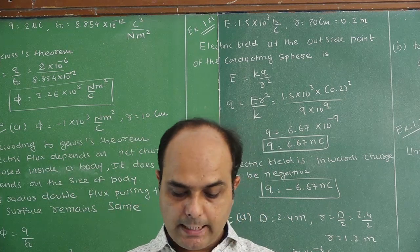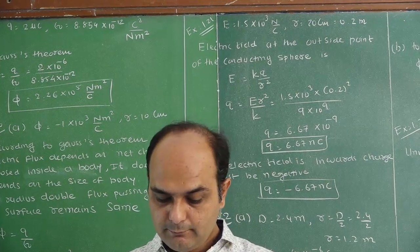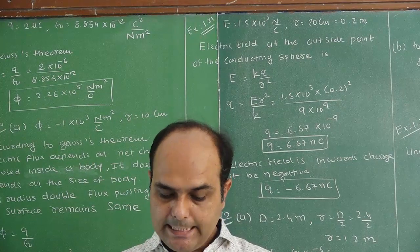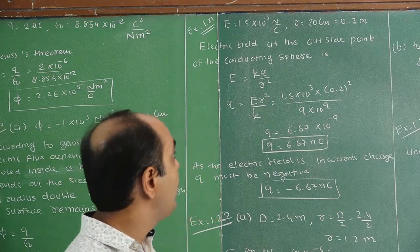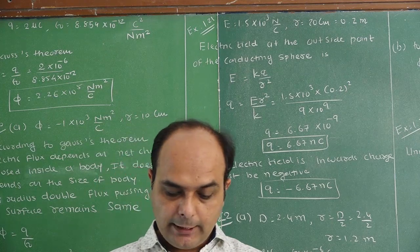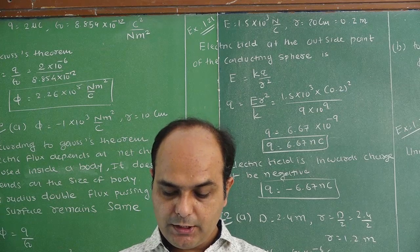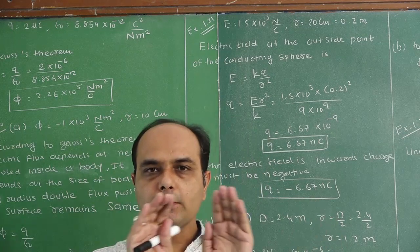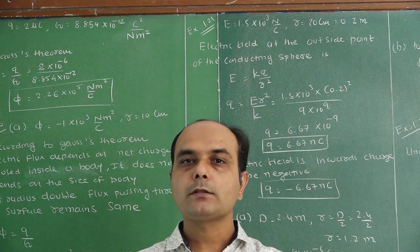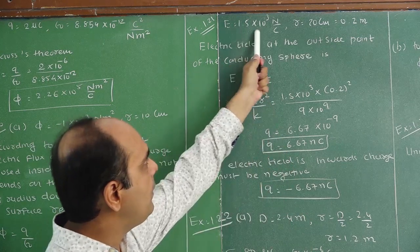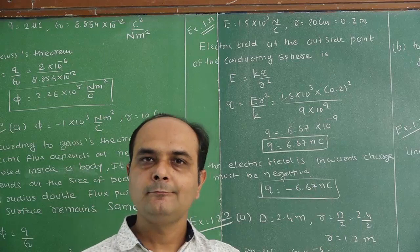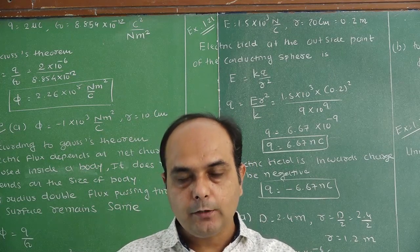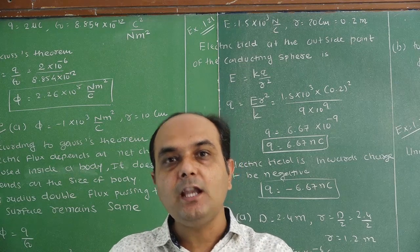The question of example number 21: a conducting sphere of radius 10 cm has an unknown charge. If the electric field at 20 cm from the center of the sphere is 1.5 into 10 to the 3 Newton per coulomb, and the point is radially inward, what is the net charge on the sphere? Since 20 cm is more than the radius of 10 cm, this is the electric field outside the sphere.